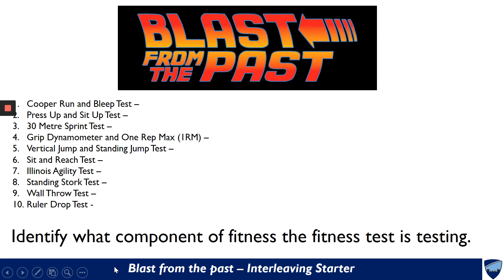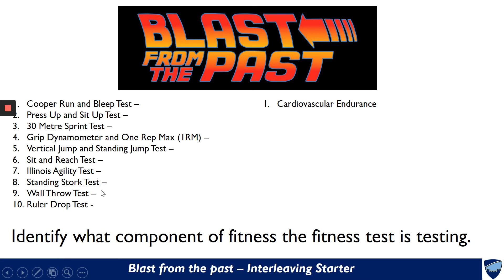On the left hand side of your screen you should be able to see a list from one to ten of different fitness tests. What I'd like you to do is identify which component of fitness each test is testing. For example, the first one — the Cooper Run and Bleep test — tests cardiovascular endurance. Have a go at numbers two down to ten and we'll come back together to go through the answers.